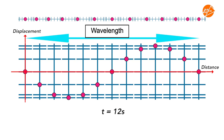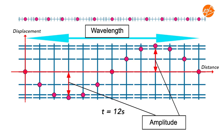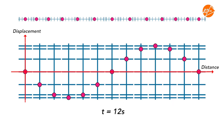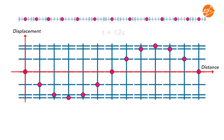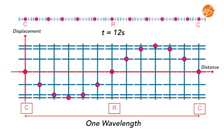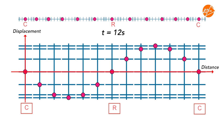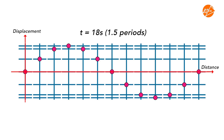Besides the wavelength, the amplitude of the wave can also be obtained from the displacement-distance graph. From this graph, we can also identify the center of compression and center of rarefaction. At time t equal to 12 seconds, these are the positions of the centers of compression and rarefaction. Can you identify the positions of all the particles and the centers of compression and rarefaction in the wave at t equal to 18 seconds?